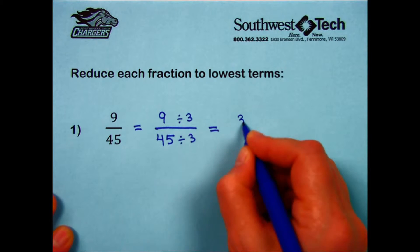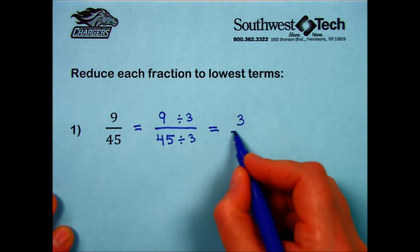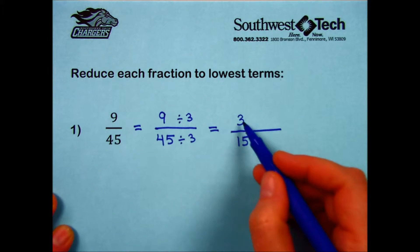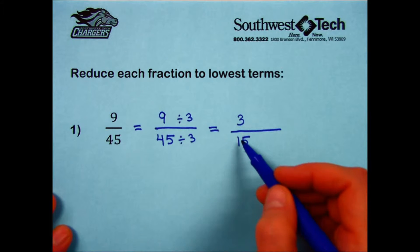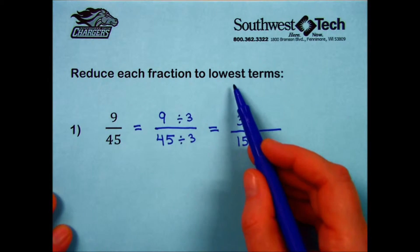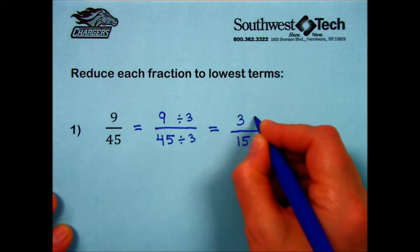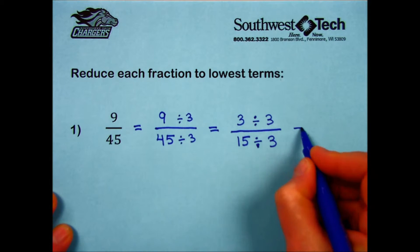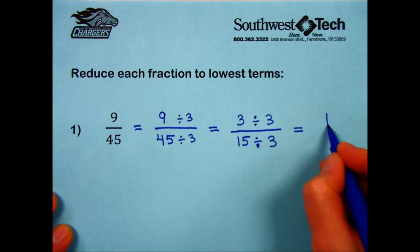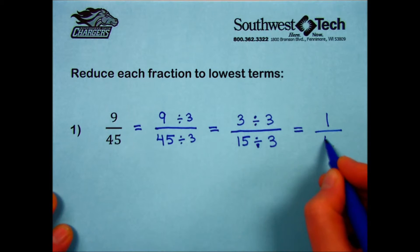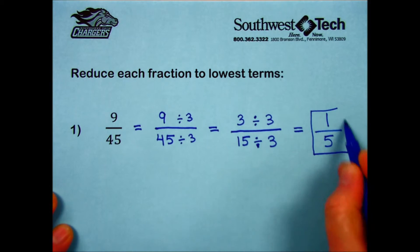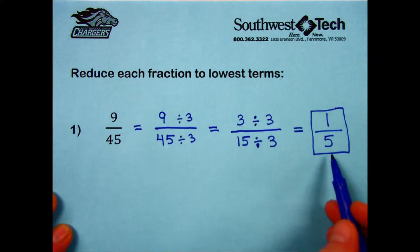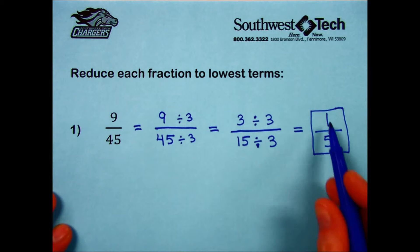9 divided by 3 is 3, and 45 divided by 3 is 15. Are we done yet? No — each of these can still be divided by 3. Lowest terms means to go as far as possible, so I divide the top and bottom by 3 again. 3 divided by 3 is 1, and 15 divided by 3 is 5. So 1/5 is equivalent to 9/45, written in the most simple terms possible.